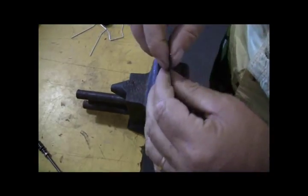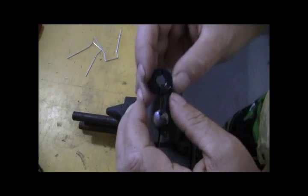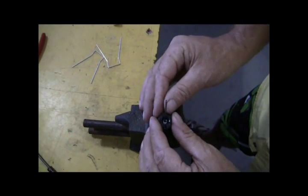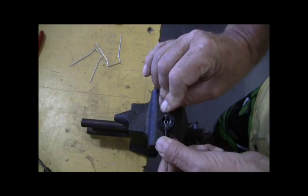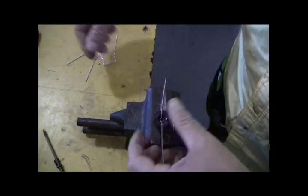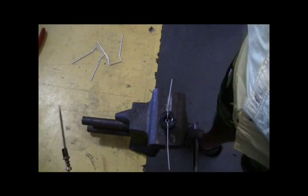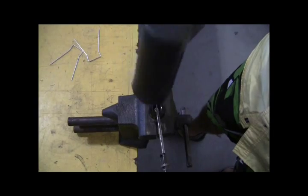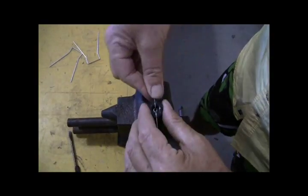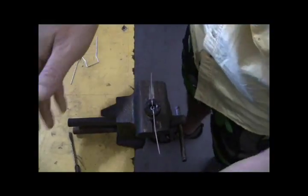Once you've done that, just place it in the vice. Take the retainer ring, place it onto the sinker, and just bend it over. What I do is I just take a screwdriver and you can just tap that in place. That's really all it needs there.